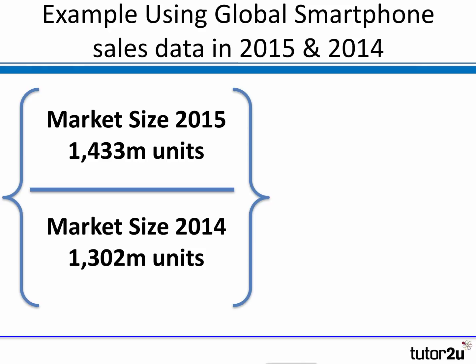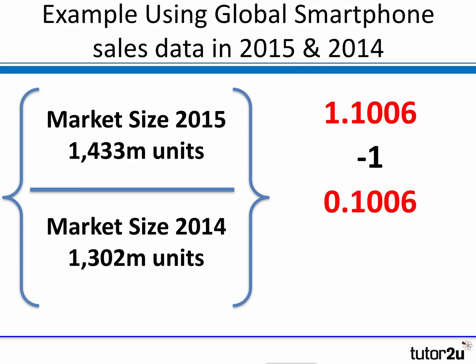Let's use the global smartphone data from the first chart. In 2015 the market size was 1,433 million units. The previous year the market size was slightly lower at 1,302 million units. We divide one by the other, which gives us 1.1006. We take away one, giving 0.1006. We multiply by 100, and that gives the percentage change. The market has grown by 10.06%.